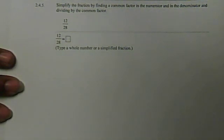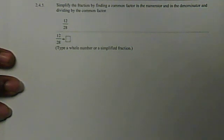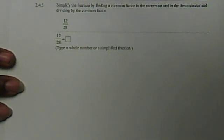Before we had our calculator we had to simplify fractions by hand. We would find the greatest common factor — which is what the previous video covered — of two numbers, then divide by it to simplify the fraction. A simplified fraction is one where the greatest common factor of the numerator and denominator is 1.